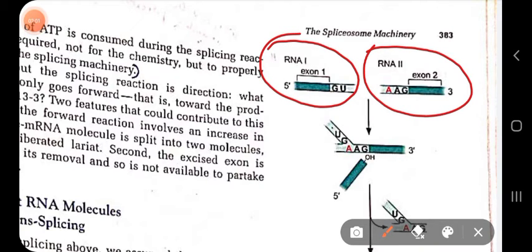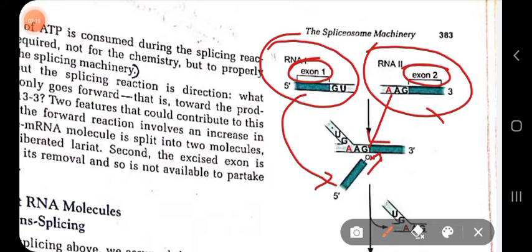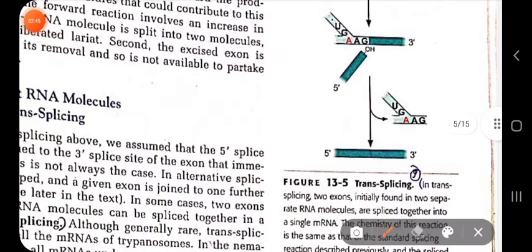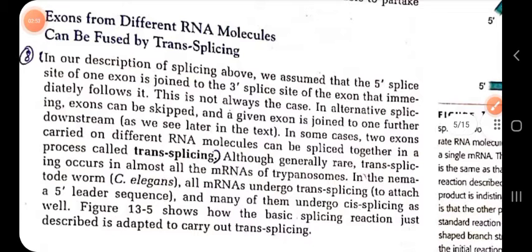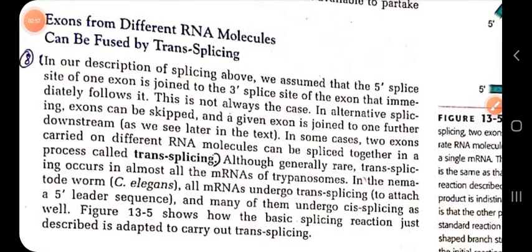Here we have RNA one and RNA two. Exon one from mRNA one and exon two from another RNA are spliced together. They join at the three prime splice site — this spliced exon from the previous RNA attacks the three prime splice site of another mRNA molecule, leading to joining of two exons from two different mRNAs, which is trans-splicing.